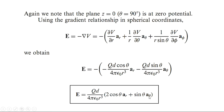The final result is E = (Qd / 4πε₀R³)(2cosθ · â_r + sinθ · â_θ). This is the electric field intensity at point P due to a dipole. We found the potential first, and by taking the negative gradient of the potential we determined the electric field intensity due to the dipole.